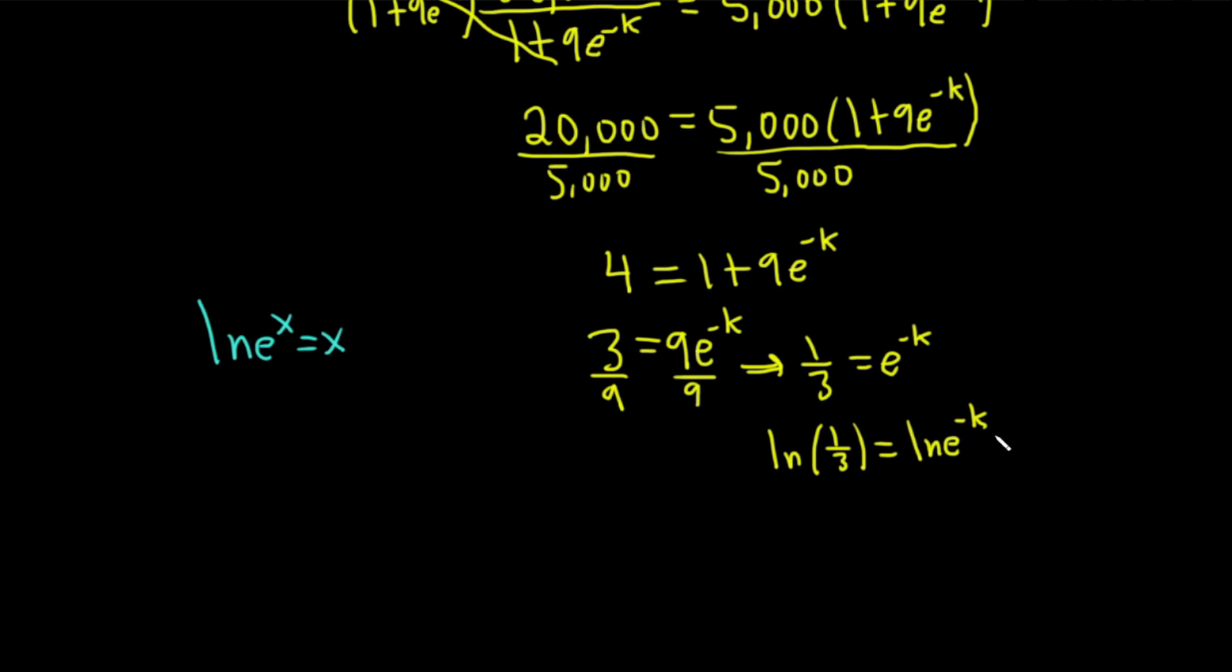In this particular case, our x is just negative k. So ln(1/3) equals negative k. Finally, k equals negative ln(1/3). That's not the answer, but it's important.